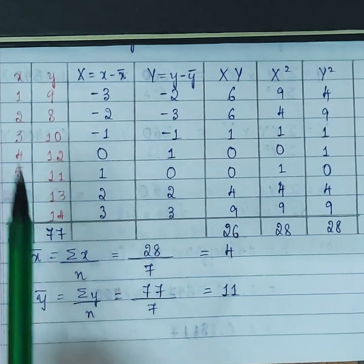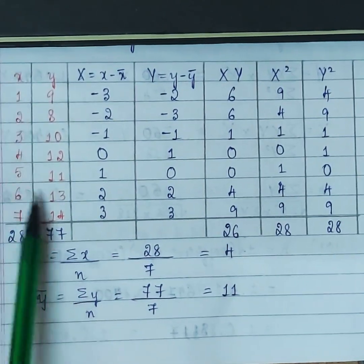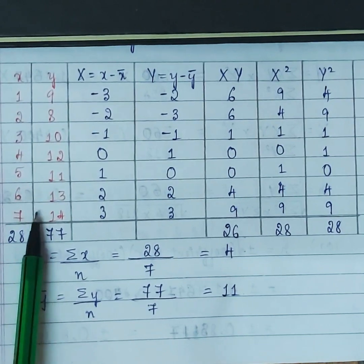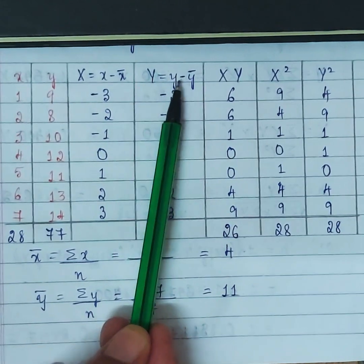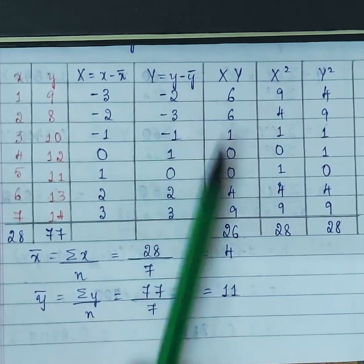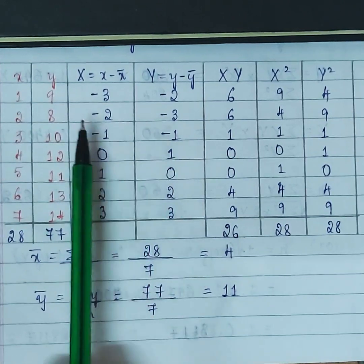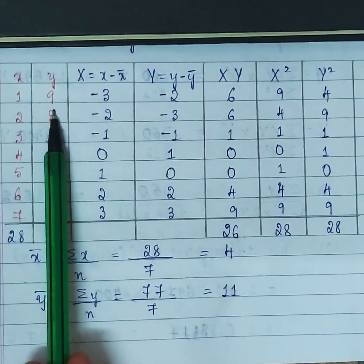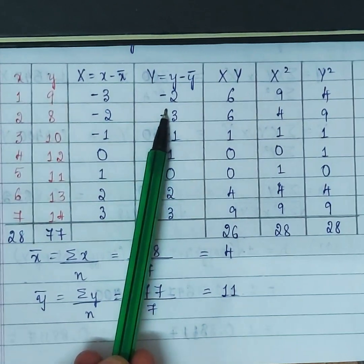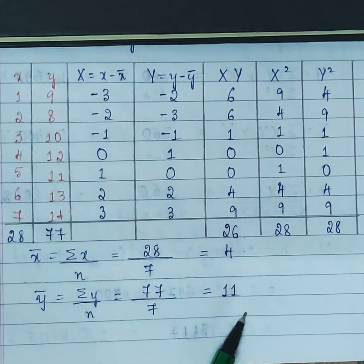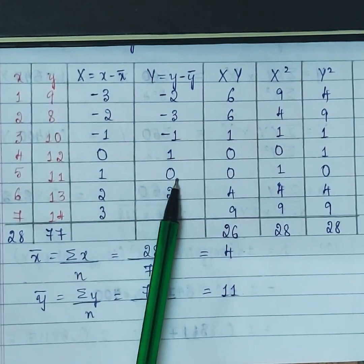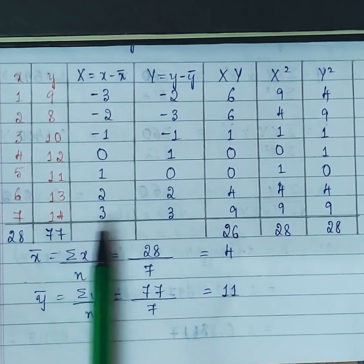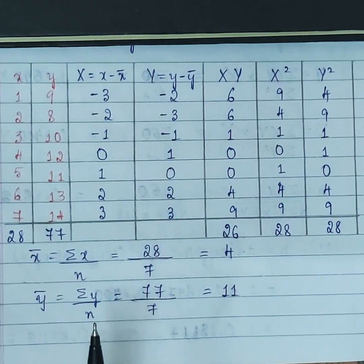We've written Capital X. Take a pencil and cancel the small x column since we won't be using it for calculation. Similarly, Capital Y = y minus ȳ. With ȳ = 11: 9−11 = −2, 8−11 = −3, 10−11 = −1, 12−11 = 1, 11−11 = 0, 13−11 = 2, 14−11 = 3. Be careful with the signs.